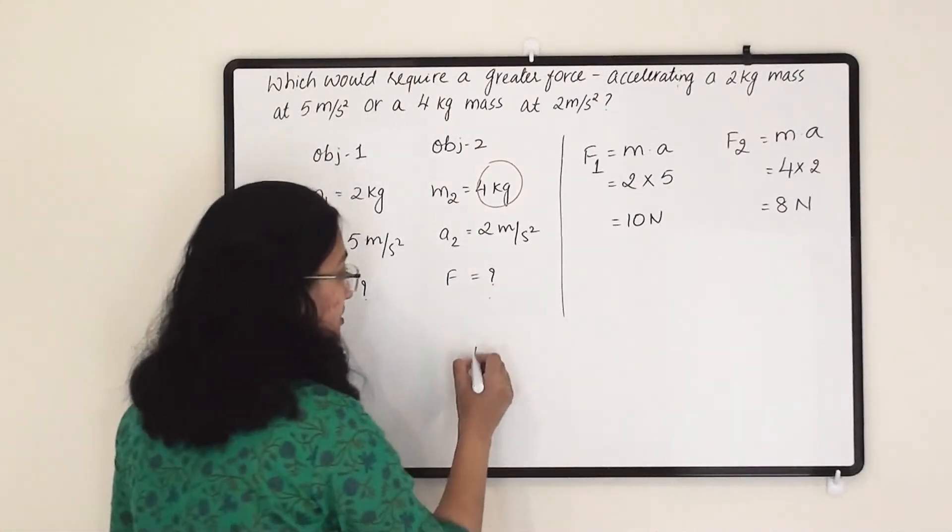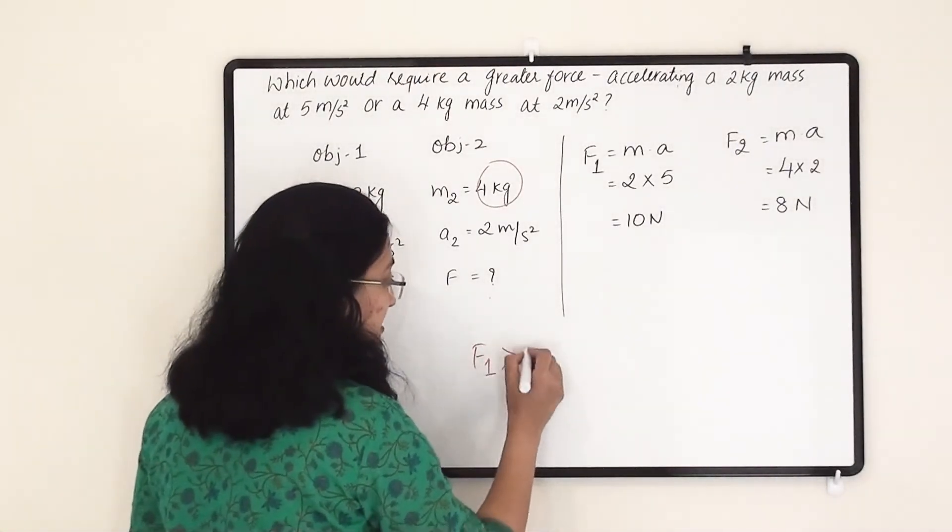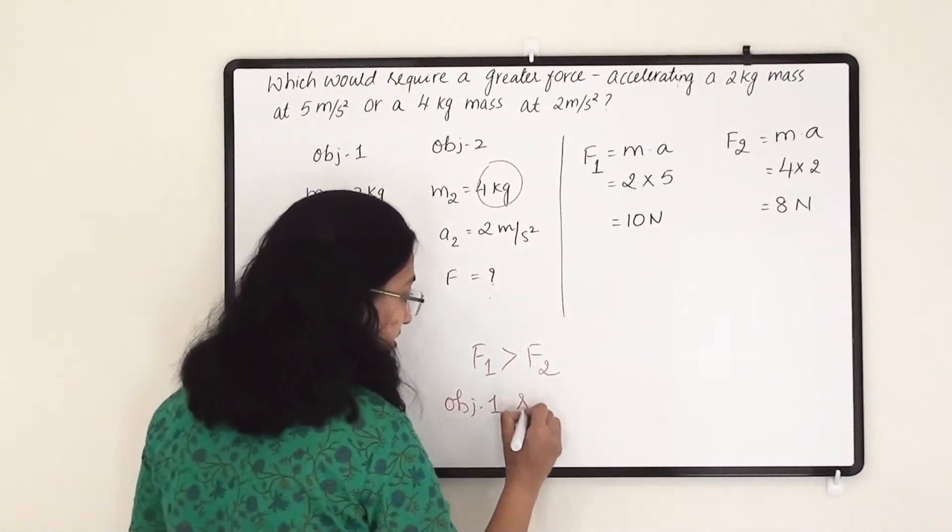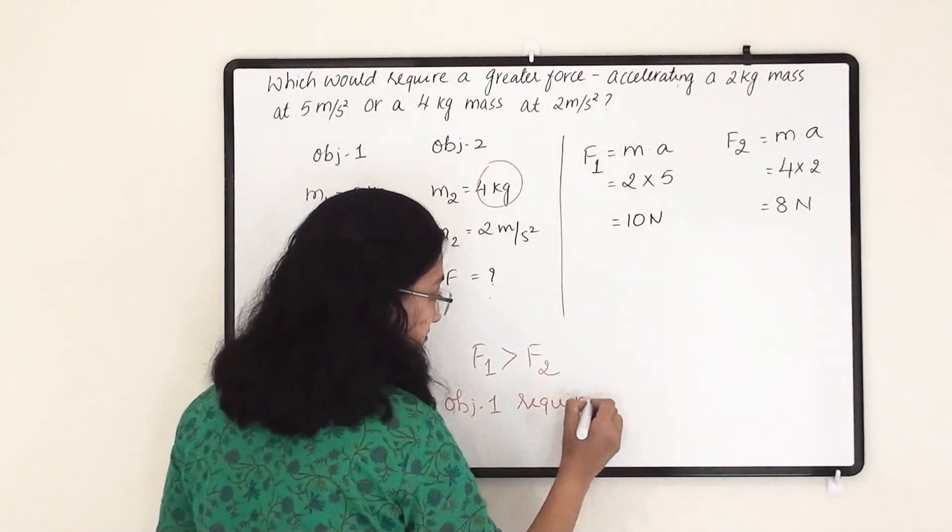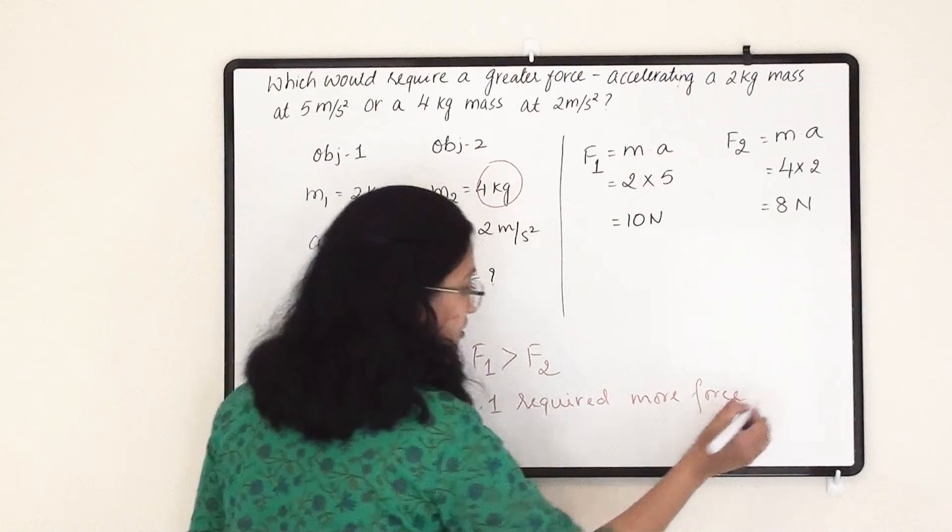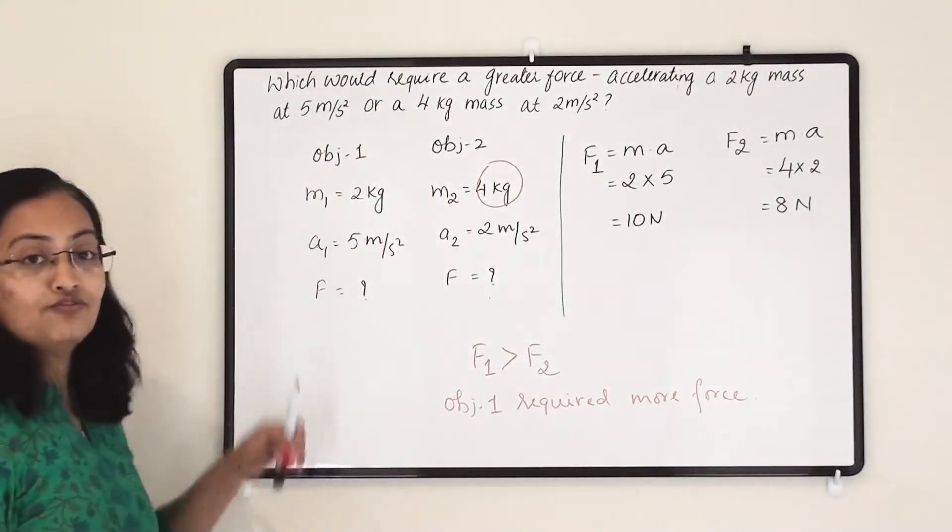So F1 is greater compared to F2. So object 1 required more force to generate this much of acceleration.